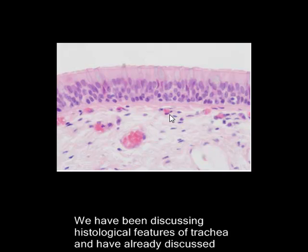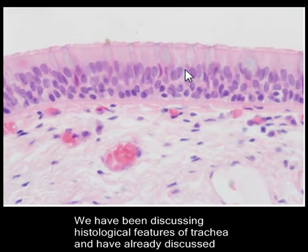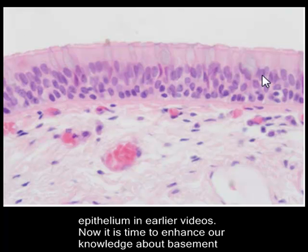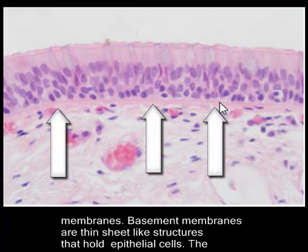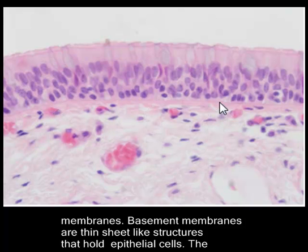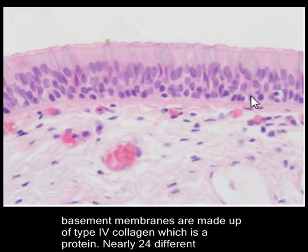We have been discussing histological features of the trachea and have already discussed epithelium in earlier videos. We will now be discussing basement membranes. Basement membranes are thin sheet-like structures that hold epithelial cells onto their surface.